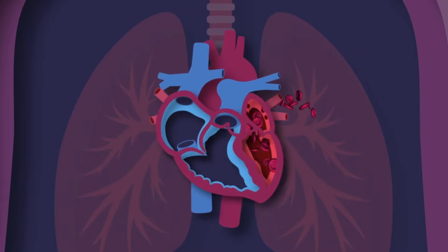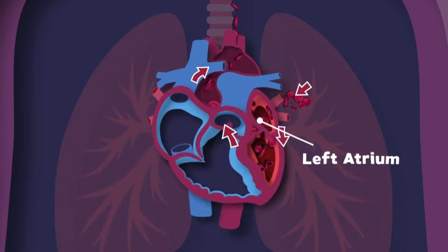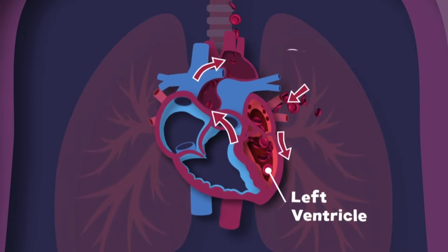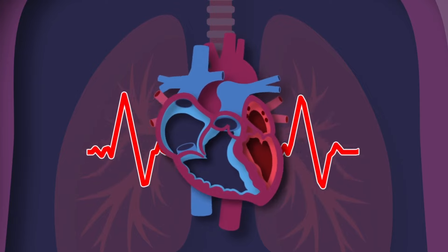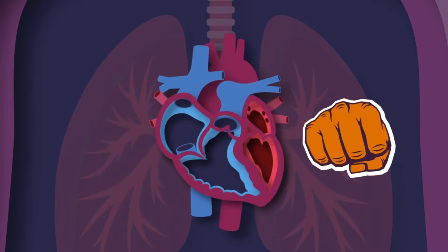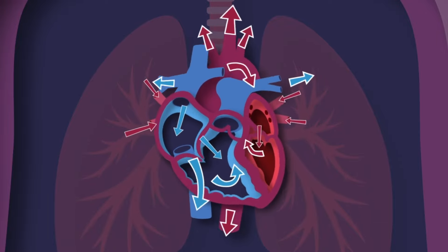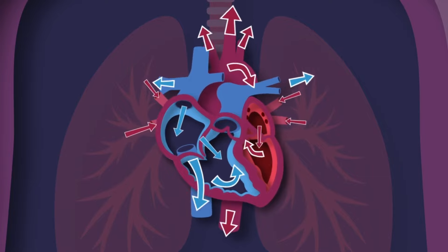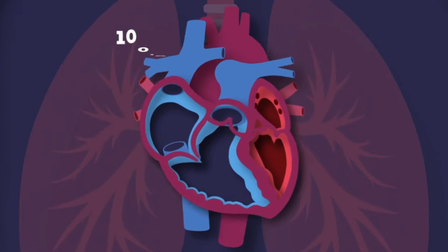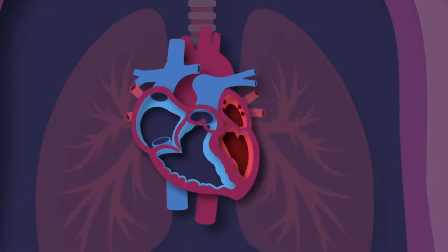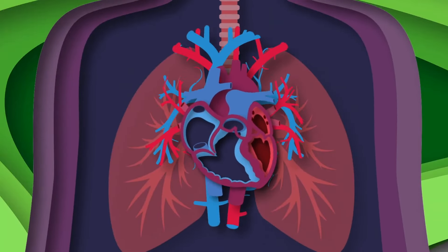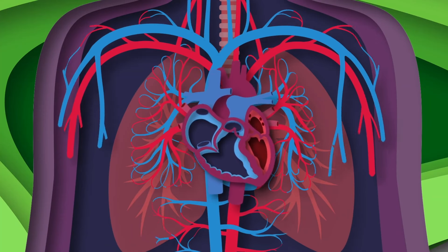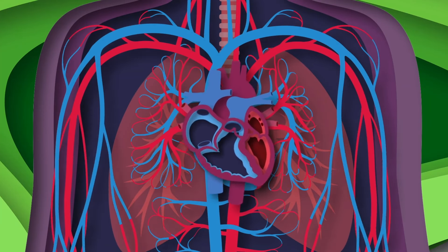The lungs fill blood with oxygen, which your left atrium receives and flows through the left ventricle to the aortic arteries. I can beat more than 100,000 times in one day, pumping about 2,000 gallons of blood through your body. There are about 60,000 miles of vessels in your circulatory system, and I always keep them full.